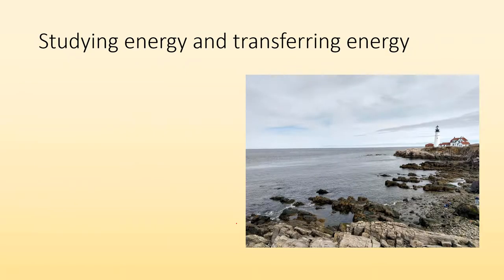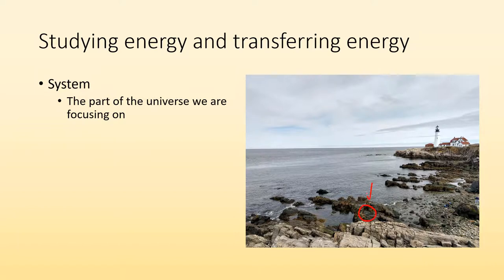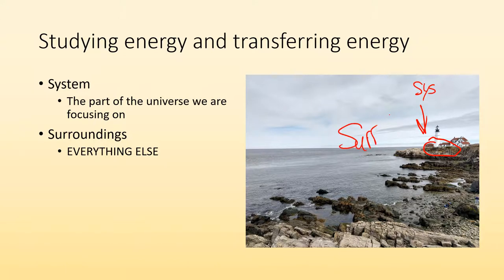So when we're studying energy and transferring of energy, we have to specify what we're looking at and what we're focused on. We have the system, which is the part of the universe that we're paying attention to. I have this beautiful picture of the coast of Maine. Now, this whole thing in the picture could be my system. Or maybe I'm more focused on what's happening in just that tidal pool. If I'm a scientist studying tidal pools, this might be my system. In which case, what do we call everything else? We call everything else the surroundings. It's literally everything else. It's just what are we focused on?